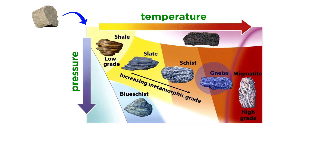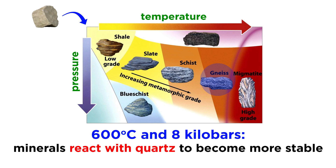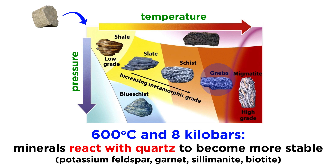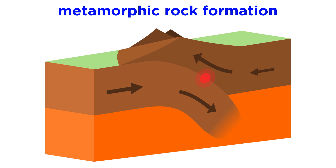Once the temperature and pressure surpass around 600 degrees Celsius and 8 kilobars, the previously stable chlorite and muscovite become unstable and react with quartz to form more stable minerals, such as potassium feldspar, garnet, and biotite. The characteristic feature of high-grade metamorphic rocks is the segregation of the mafic and felsic minerals during recrystallization, which manifests as alternating bands of light and dark minerals. Rocks that display this type of foliation are called gneiss. Now that we understand how metamorphic rocks form, let's move forward and get a closer look at the different types of metamorphism, so we can better understand the different types of metamorphic rocks.